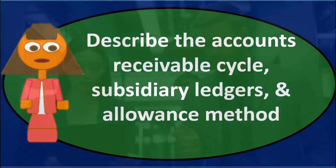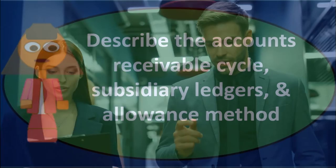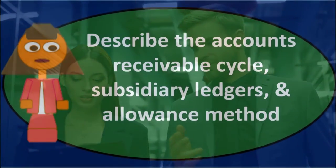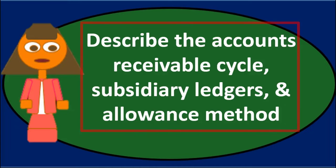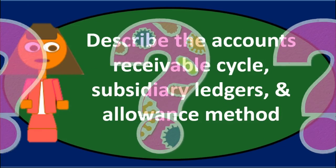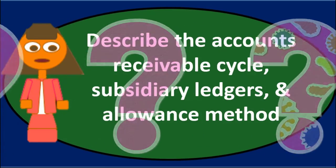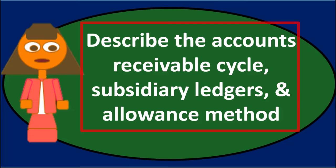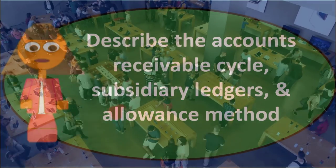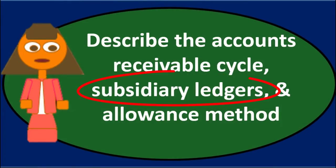You can imagine if we're a company, the first question an owner would ask the bookkeeper is: how much do people owe us? If there's $100,000 on the books, we say they owe us $100,000. The next question is going to be: when are we going to get paid? Who owes us the money? Have we sent them reminders recently? Are we expecting to get paid soon? To answer those questions, we need to order things by customer — who owes us money by customer — and that's done with a subsidiary ledger.